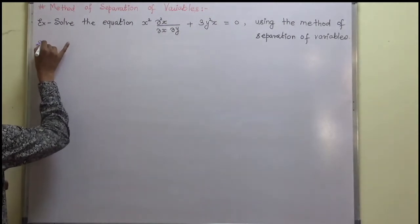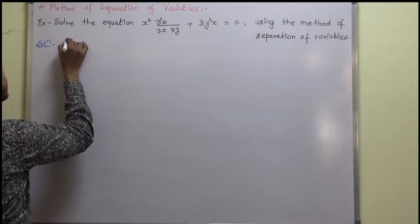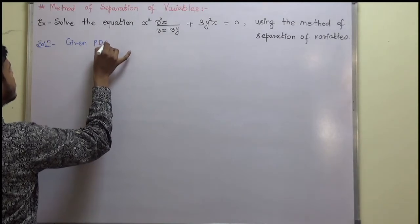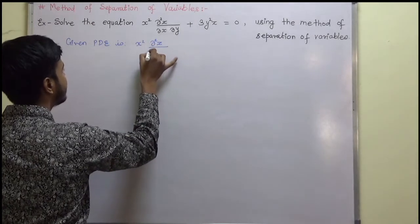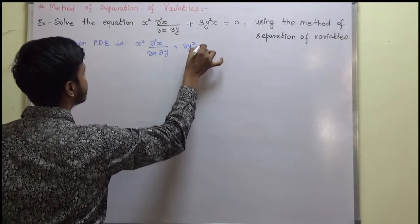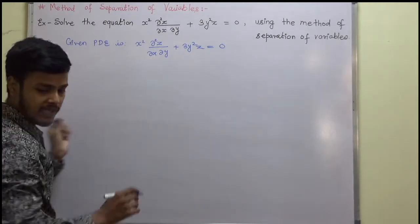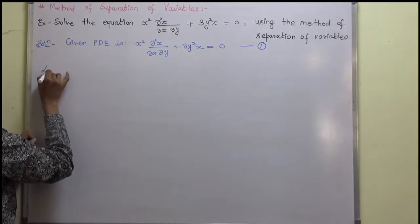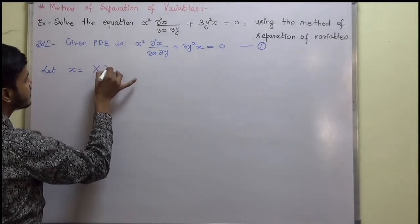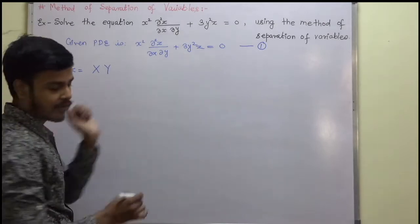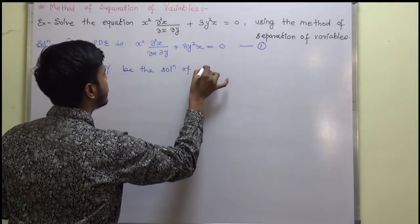How do we approach such a problem? You should always start with what is given. The given PDE is: x² · del²z/del x del y + 3y²z = 0. This is equation 1. We propose that z = X · Y be the solution of equation 1, where capital X is a function of x and capital Y is a function of y.